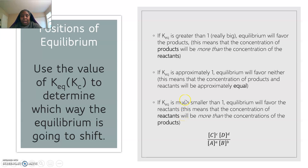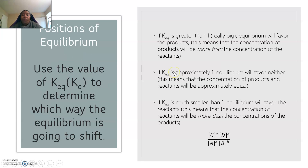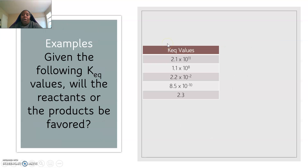Some of you are looking around like you don't know what that means, so let's break it down. You guys have five examples on your worksheet. All it gives you is the equilibrium constant and asks what's going to be favored — the reactants, the products, or neither. Our first one is 2.1 times 10 to the 11th. That is a huge number, so if your equilibrium constant is greater than 1, it's going to favor the products.